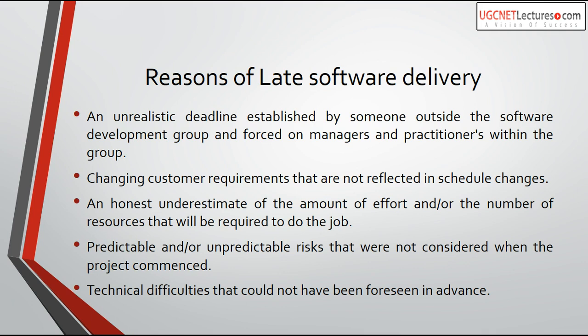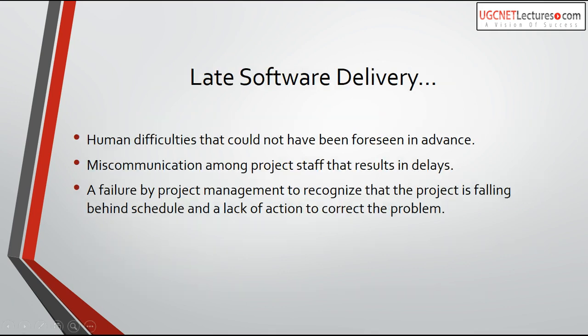In the software development process, a lot of risks are involved. If you ignore the risk, your software may go beyond the deadline. Risks definitely exist in software development and we must account for them. Technical difficulties that could not be foreseen in advance — for example, the available tools may not be sufficient for developing a particular software. Human difficulties that could not be foreseen in advance, such as miscommunication among project staff, can also result in delays. Finally, a failure by project management to recognize that the project is falling behind schedule, and a lack of action to correct the problem.